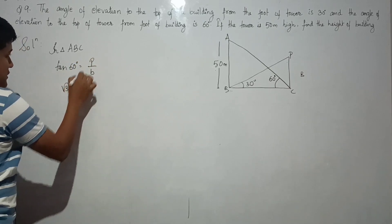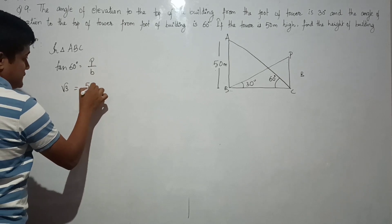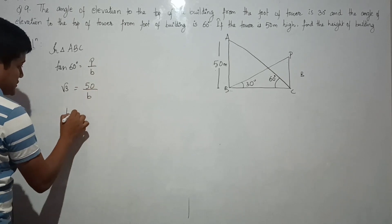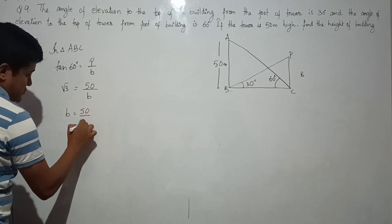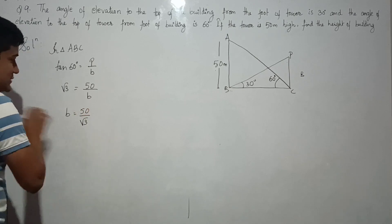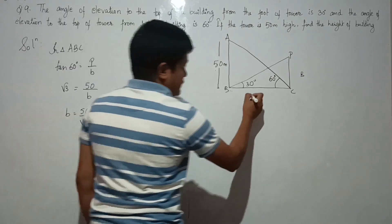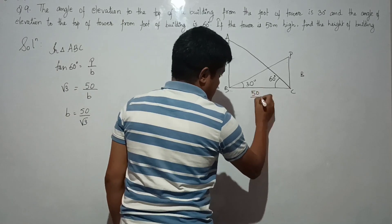Tan 60 is root 3, and perpendicular is 50, so base equals to 50 by root 3. So the value is 50 by root 3. I can rationalize, since I have a root in